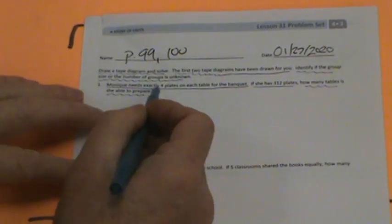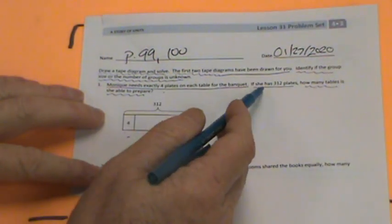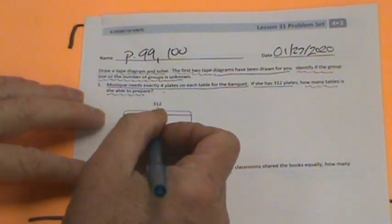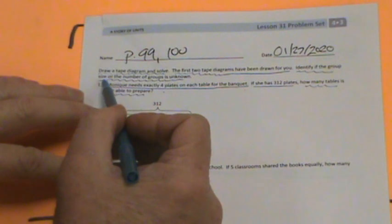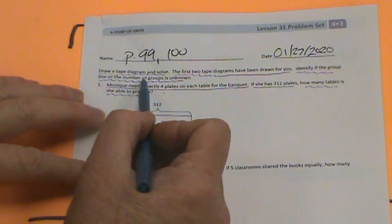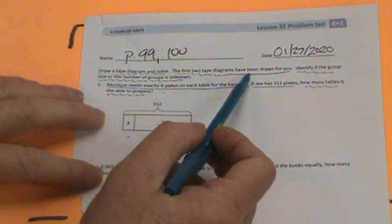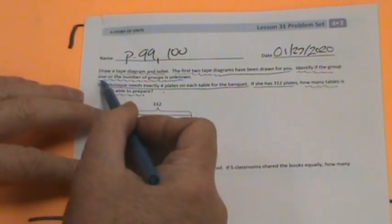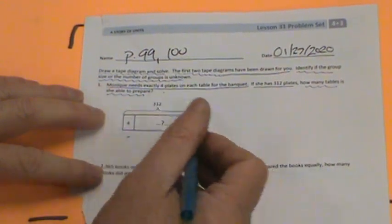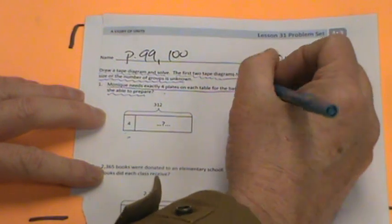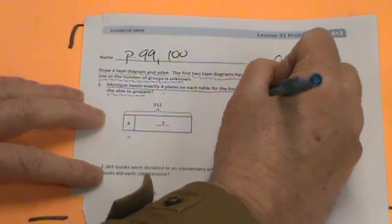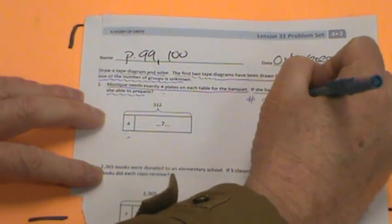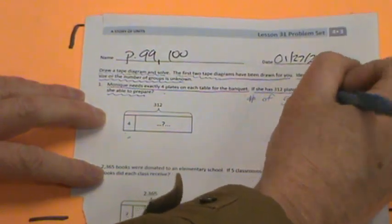What do we not know? Let's take a look. Identify if the group size or the number of groups is unknown. We do not know the number of groups. That's what's unknown.